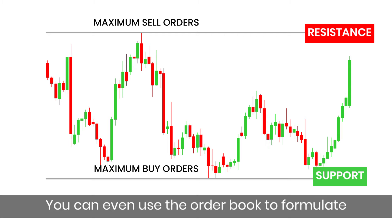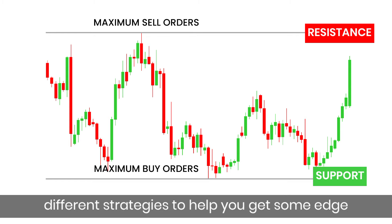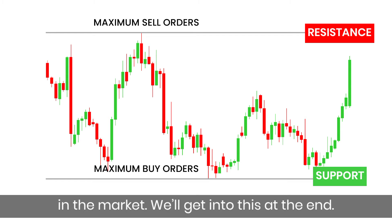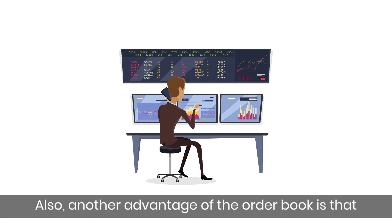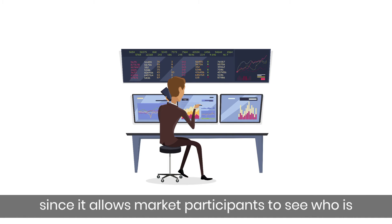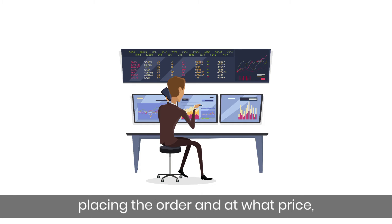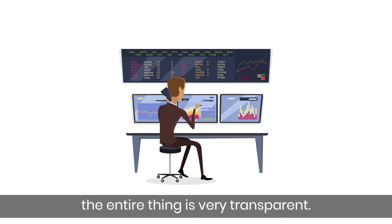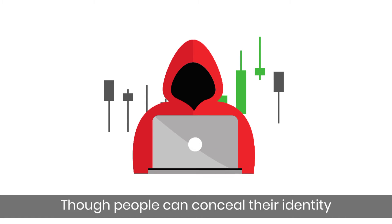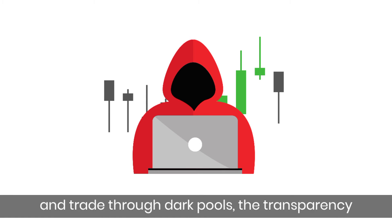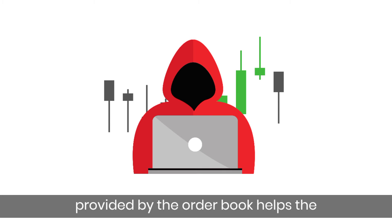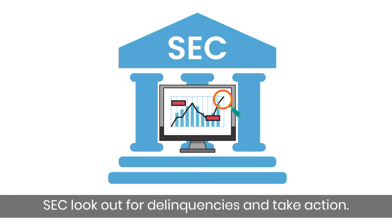You can even use the order book to formulate different strategies to help you get some edge in the market. Also, another advantage of the order book is that since it allows market participants to see who is placing the order and at what price, the entire thing is very transparent. Though people can conceal their identity and trade through dark pools, the transparency provided by the order book helps the SEC look at delinquencies and take action.